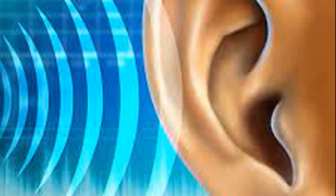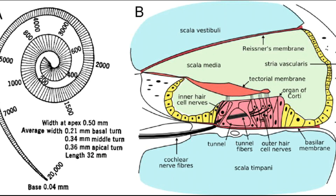But how does our brain know whether we're hearing a high-pitched flute or a low-pitched bass? The answer lies in the way different frequencies of sound activate different hair cells along the basilar membrane. The basilar membrane is not uniform in its structure — it varies in width and stiffness along its length. The base of the cochlea, near the oval window, is narrower and stiffer, and this region responds best to high-frequency sounds, such as the sharp notes of a violin or the chirping of birds.